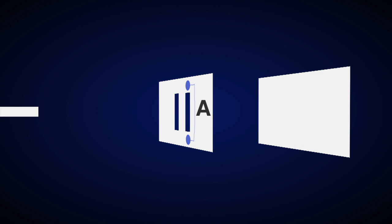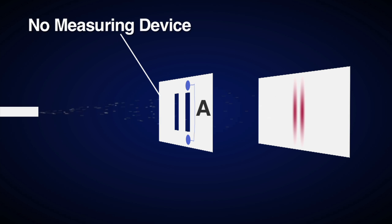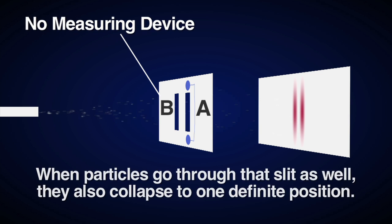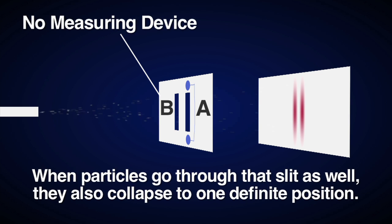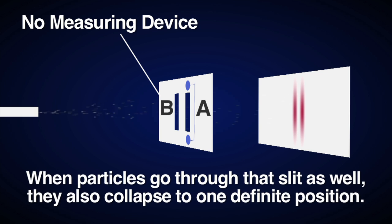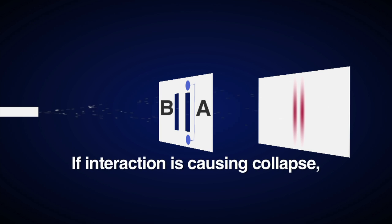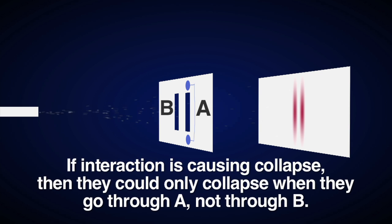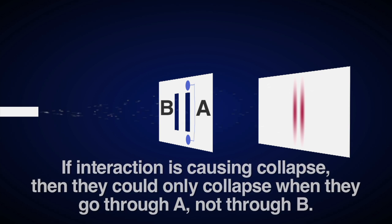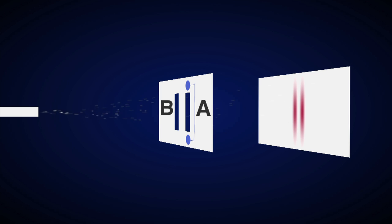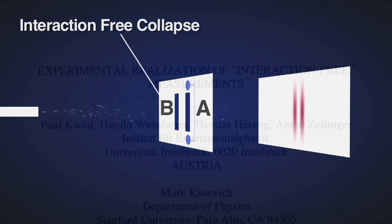But there is an important key element missing here, and that is, if we place a measuring device at A and shoot particles at the double slit, we have not placed the second measuring device over slit B. However, when particles go through that slit as well, they also collapse to one definite position, even though there was no measuring device there to interact with. But how could this be? If interaction is causing collapse, then they could only collapse when they go through A, not through B. But despite this, particles collapse when they go through both slits, not just one, and thus for particles that go through B, we have an interaction free collapse, which is what was demonstrated in 1994.